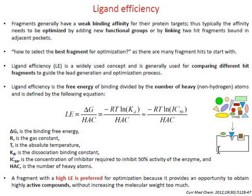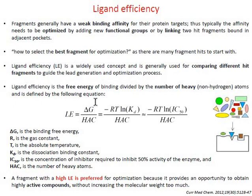We studied the rule of three for selecting or defining fragments that can bind at a protein active site. To select the best fragment for further optimization, there is the concept of ligand efficiency, which is based on the calculation of binding free energies of these fragments with respect to the protein. Ligand efficiency is the binding free energy divided by the number of heavy atoms of the fragment.